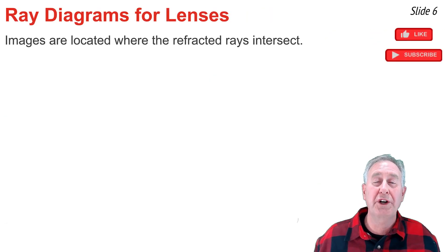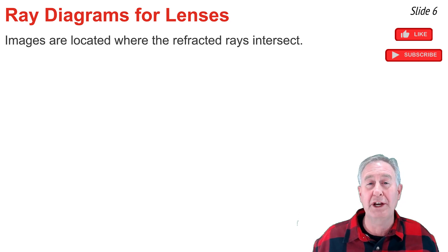In the next video of this tutorial series, I will be discussing how to construct ray diagrams for converging lenses, but the foundational principle for doing it has been presented in this video. Images are located at the location where refracted rays intersect.